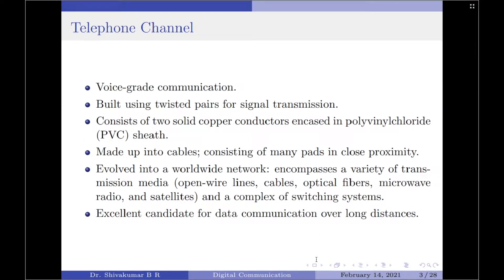Starting with the telephone channel — a telephone channel is designed to provide voice-grade communication. It is built using twisted pairs for signal transmission. A twisted pair consists of two solid copper conductors, each encased in polyvinyl chloride (PVC) sheet. Twisted pairs are usually made up into cables, with each cable consisting of many pairs in close proximity to each other.